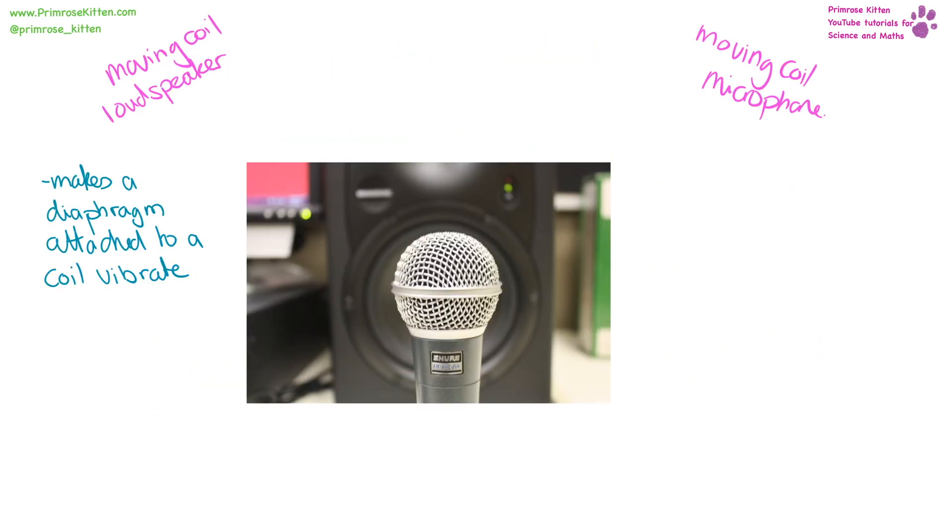A moving coil loudspeaker works by making a diaphragm attached to a coil vibrate. When we have a current passing through the coil, the force that is generated via the motor effect makes the coil move. Every time the current changes direction, the force reverses direction. So the coil is going to be going back and forwards, making the diaphragm go back and forward, generating sound waves.